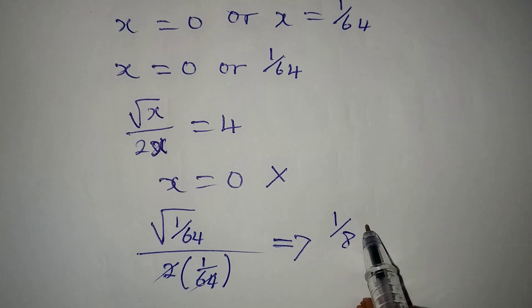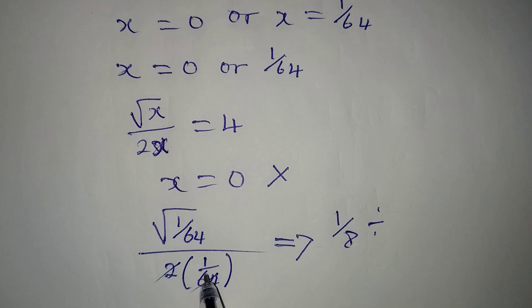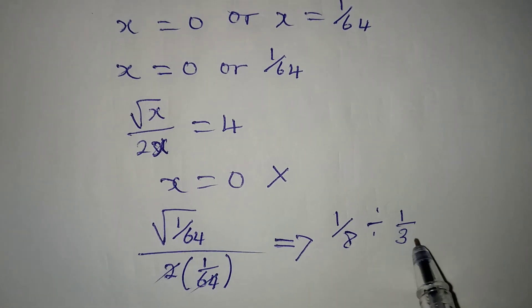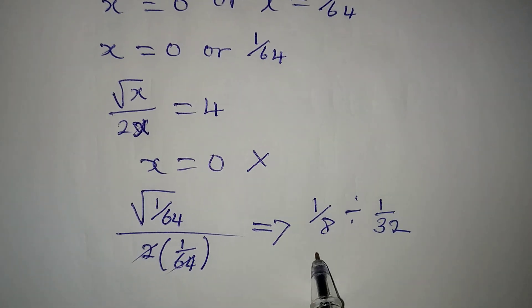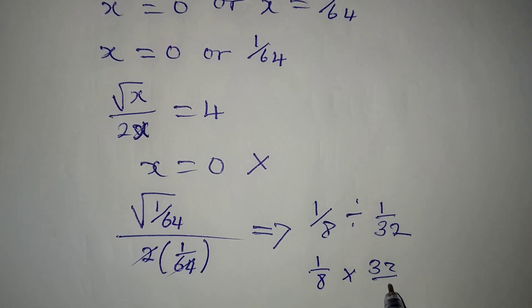So we have to divide this by 1 over 32. Now we have 1 over 32, then turn this to multiplication. So we have 1 over 8 times 32 over 1.